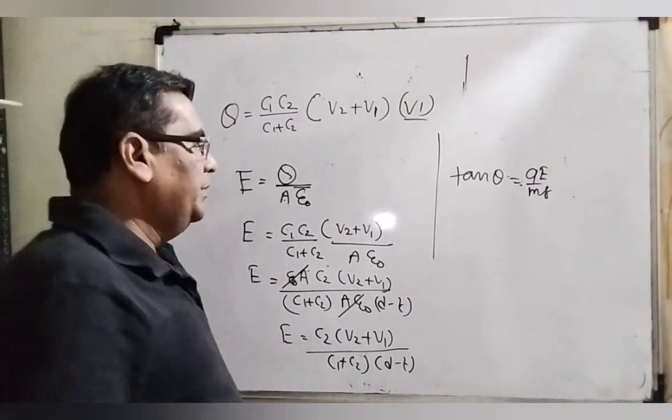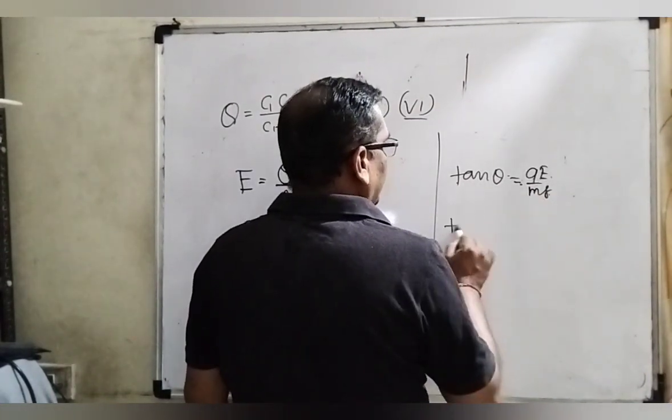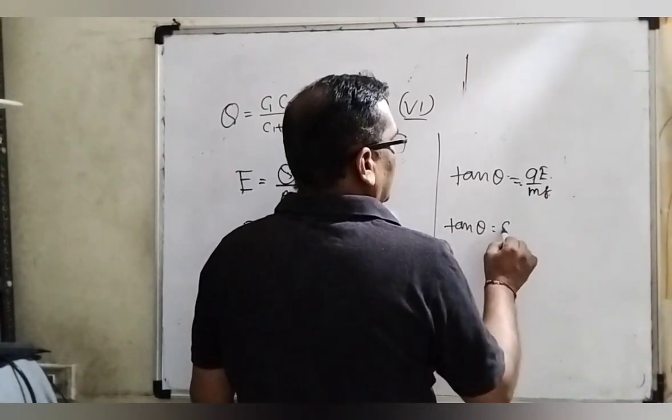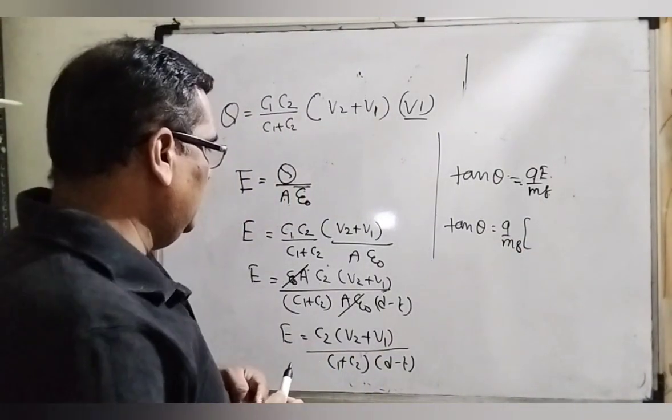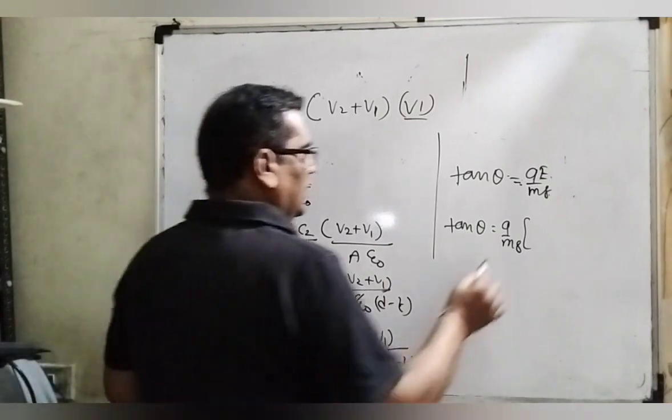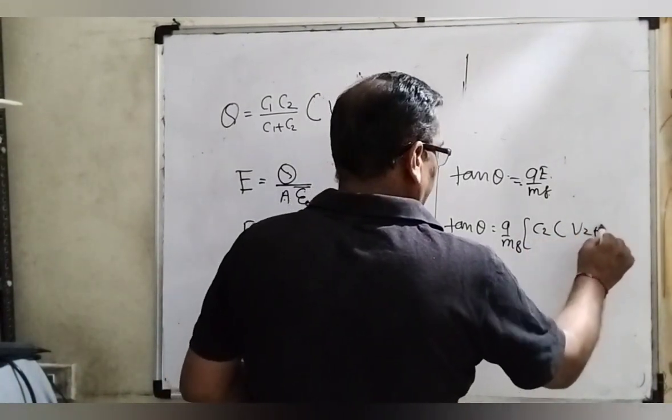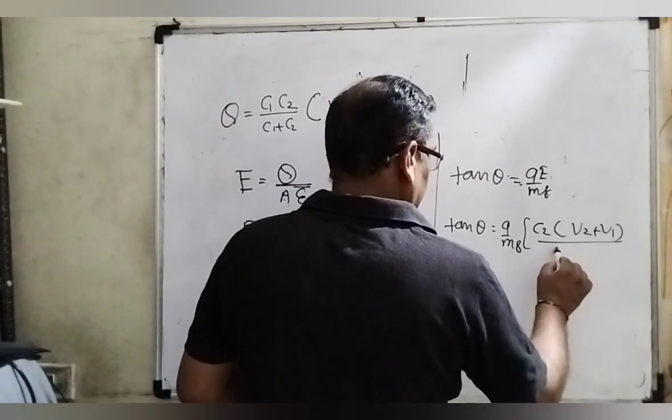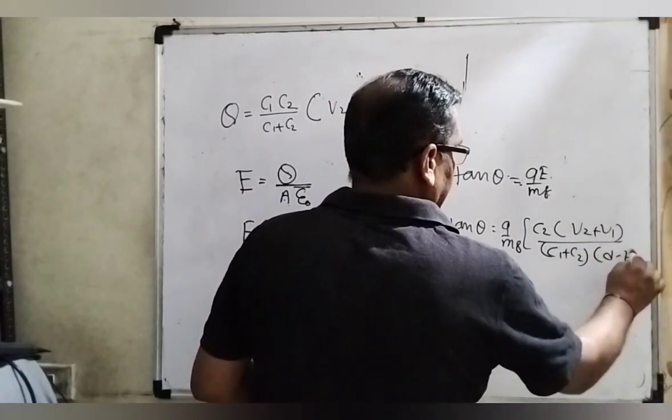Now substitute this value in our first equation. Tan theta equal to Q E by M G. Then tan theta Q by M G and then substitute the value of E. Here whole value is E: C2 into bracket V2 plus V1 upon C1 plus C2 into bracket D minus d. Yes, first option is the correct answer.